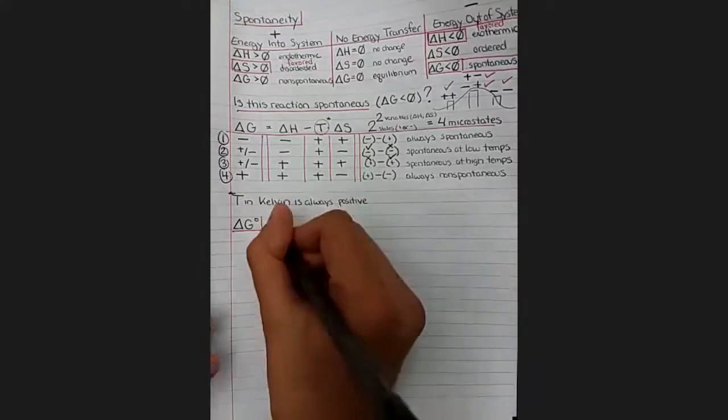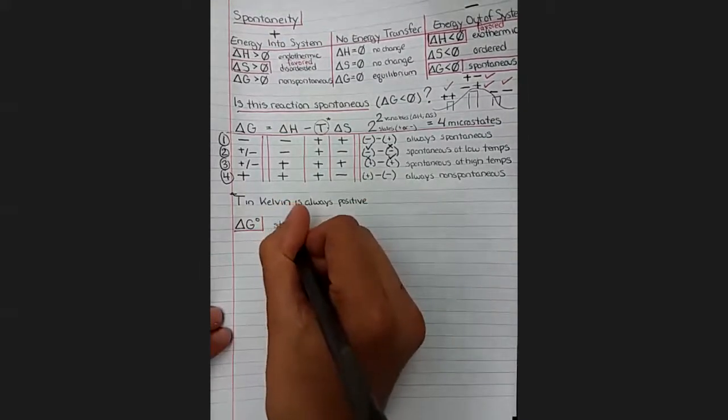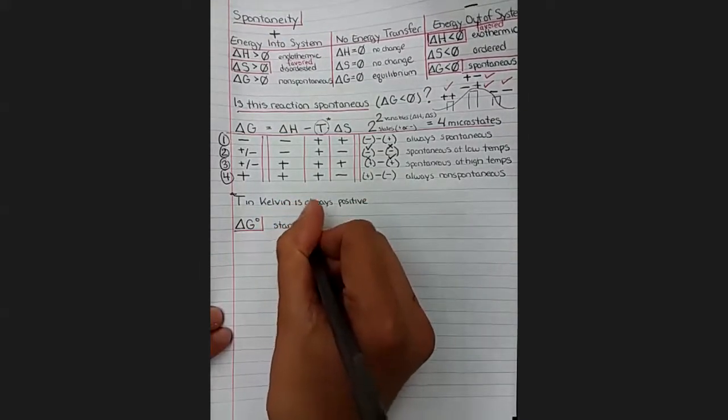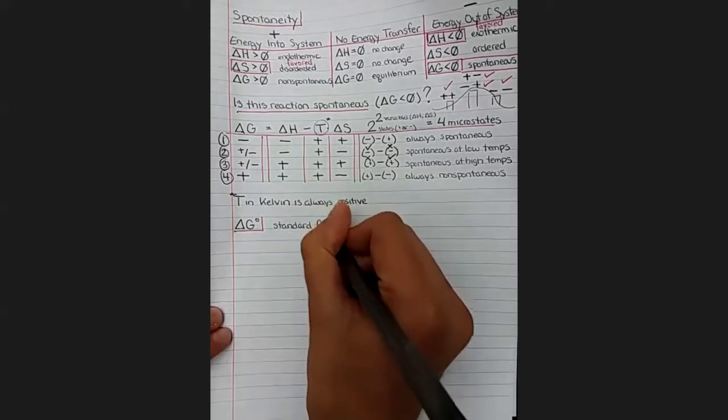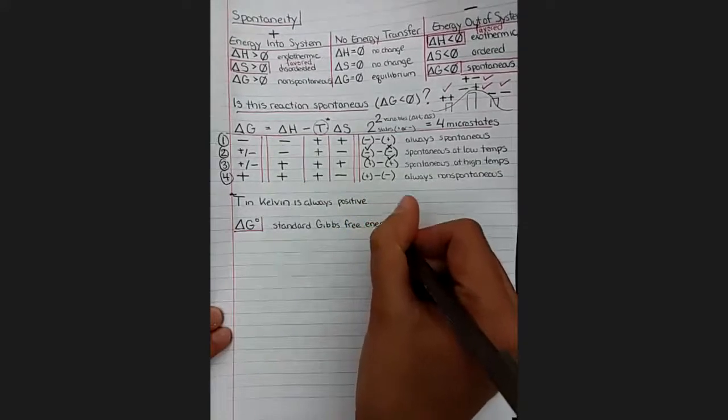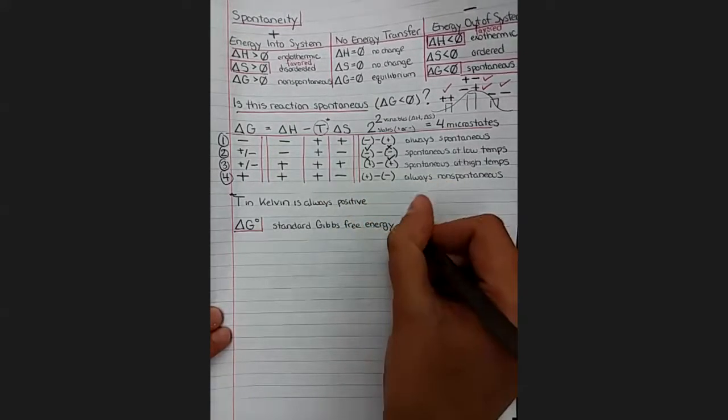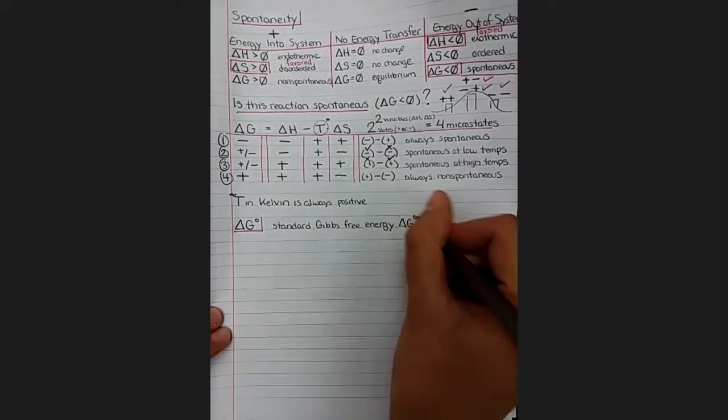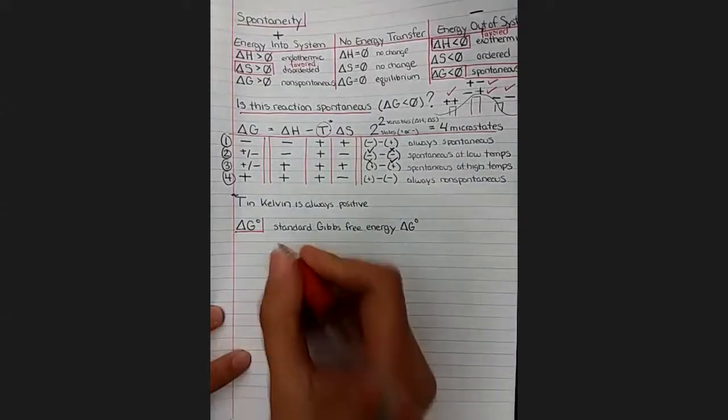So this is going to sound a bit like a broken record here, but there is a standard set of conditions at which we measure Gibbs free energy. And it is the same set of standard conditions that we used for enthalpy and entropy. That's why it's called standard.